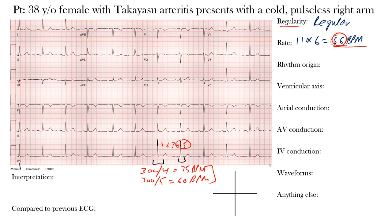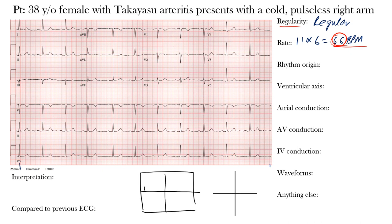Next we look at rhythm origin. We have narrow QRS complexes, so it must be supraventricular in origin — originating from above the ventricles. We can also make out clear, defined, similarly shaped P waves in each lead. So we ask: are we dealing with sinus rhythm? Sinus rhythm means it's originating from the sinus node — up here high in the right atrium near the superior vena cava. From there, we have internodal pathways, a Bachmann bundle to the left atrium, the AV node, and then the His bundle, right bundle branch, and left bundle branch subdividing into anterior and posterior fascicles.